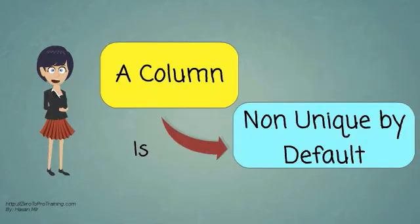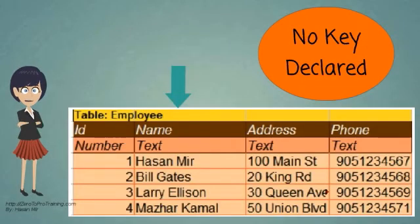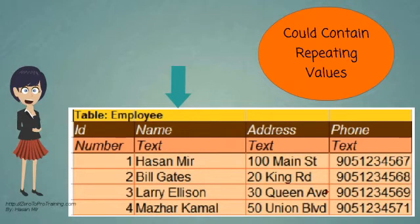A column does not have any key on it by default and hence all columns are non-unique unless a key is created on them. And that is the case with the name column. The name column could have repeating values in it. There could be two Bill Gates in this table. But both will have different IDs.